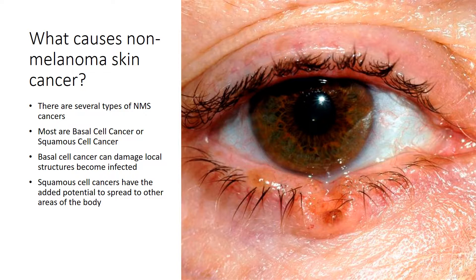There are several types of non-melanoma skin cancers. The vast majority are basal cells or squamous cells. Basal cell cancers can damage local structures and become infected and bleed. They do not lead to death or spread to other areas of the body. On the other hand, squamous cell cancers have the added potential to spread to other areas of the body. This diagram here shows an example of a small basal cell cancer on the lower eyelid, which is something that we treat.